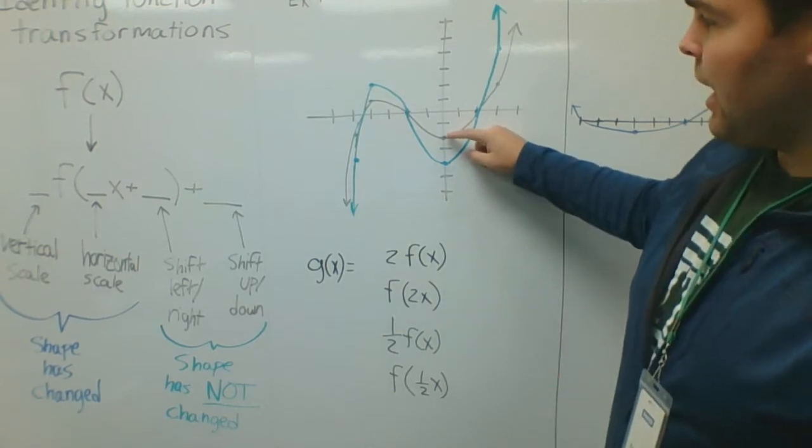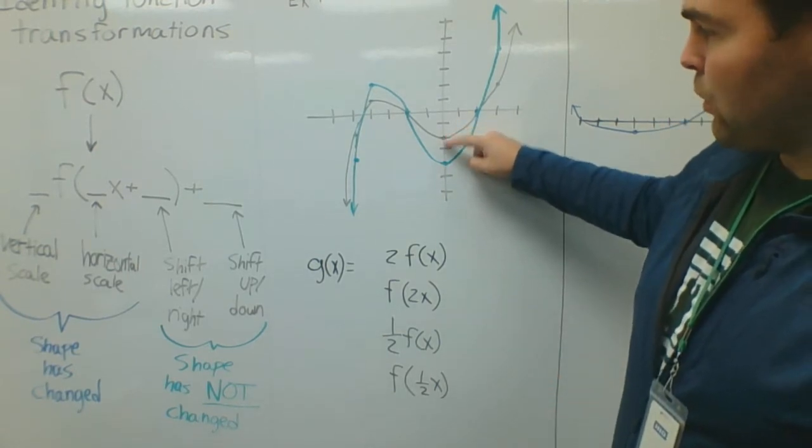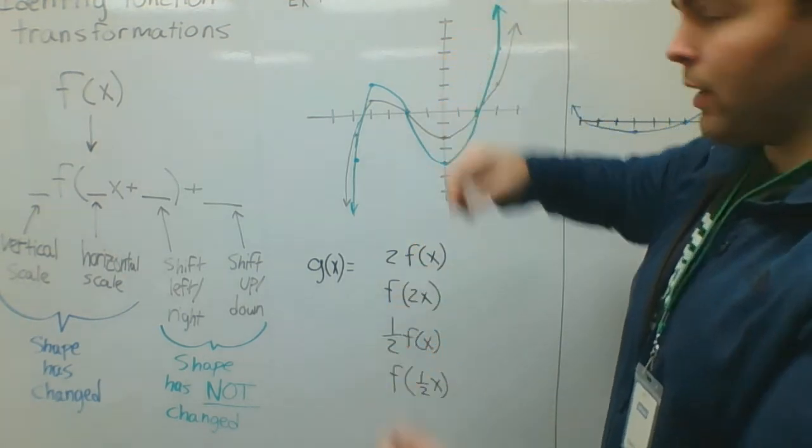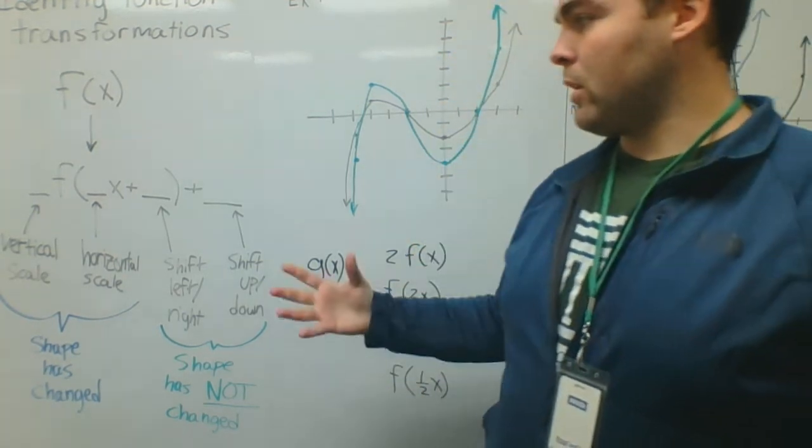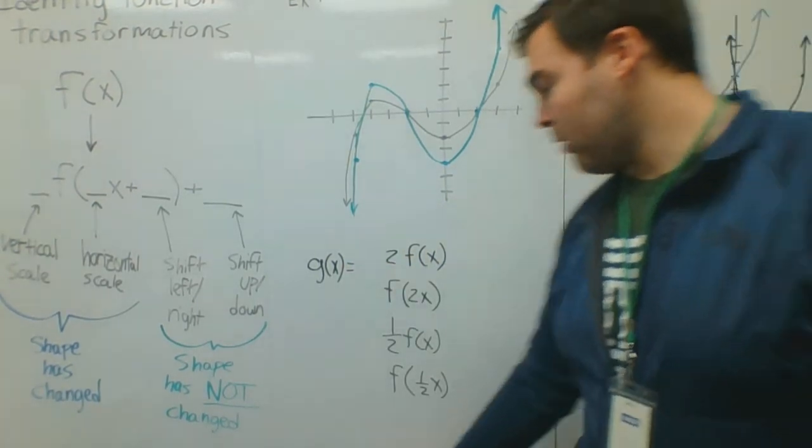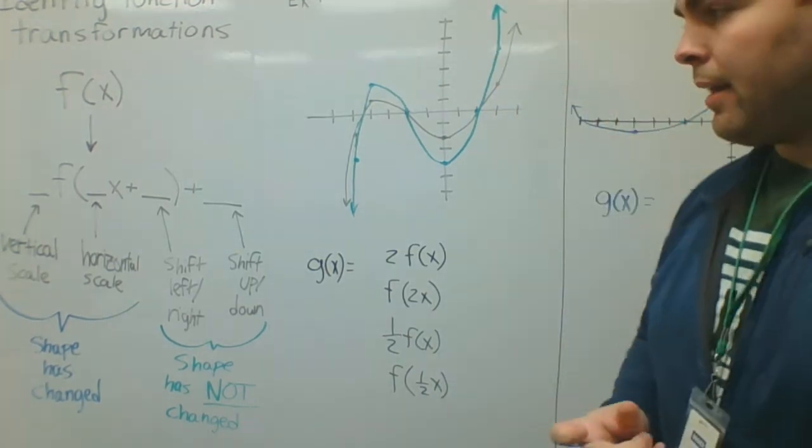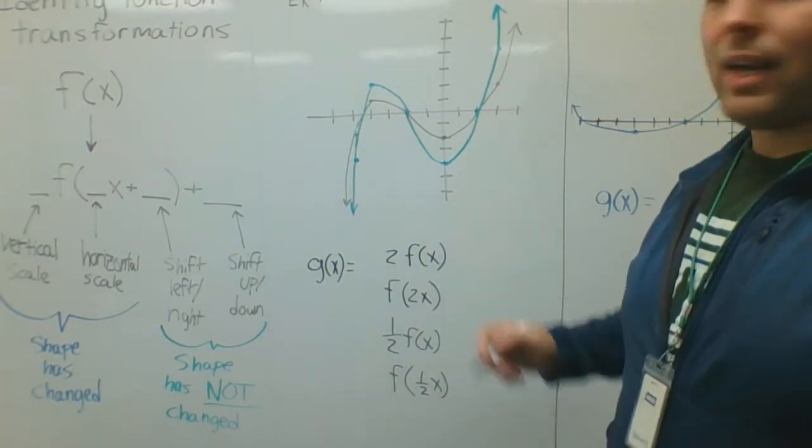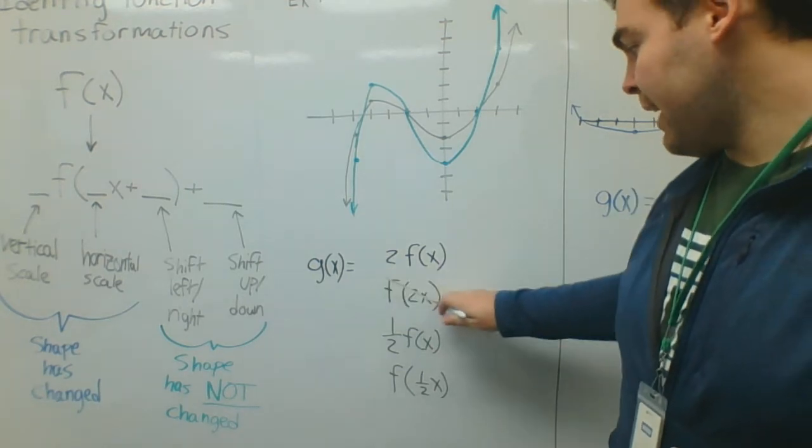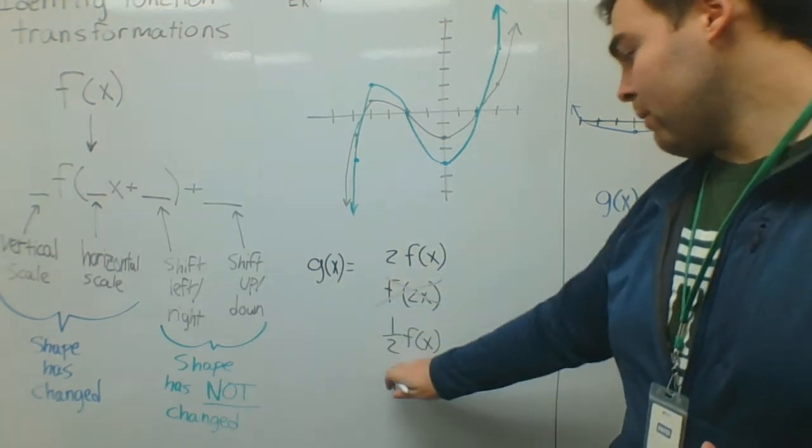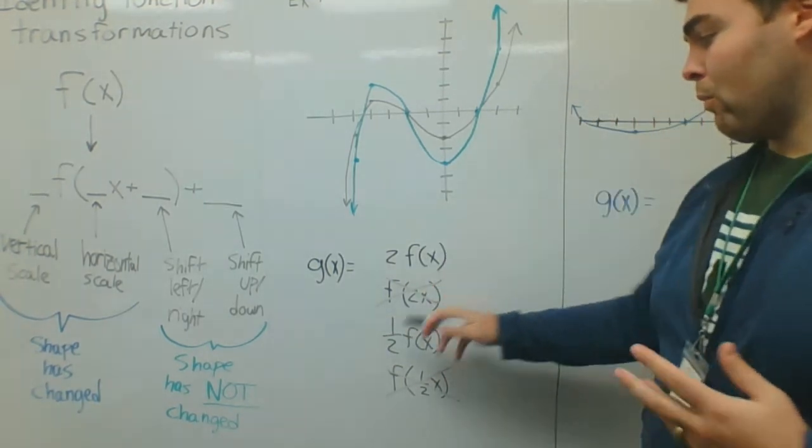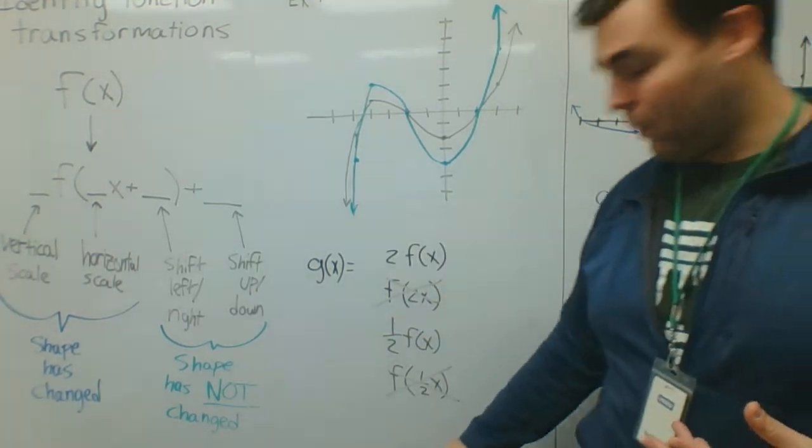In this case, I can see that if I look right here, this is moved vertically. This point is moved vertically. So I know it's going to be a vertical scale. So when I go through my multiple choice answers, two of them I can cross out right away. I know I can cross out my horizontal scale ones. So horizontal scale ones are when the number is inside next to x. So I know it's not going to be that. I know it's not going to be that. So the question is, is it 2 times f of x or 1 half times f of x?